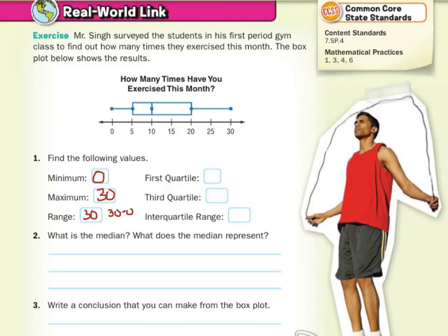For the first and third quartile: the first quartile is the median of the lower half of the data, and the third quartile is the median of the upper half of the data. On a box plot, that's represented at the ends of the boxes. So the first quartile is down here at 5, and the third quartile is up here at 20.